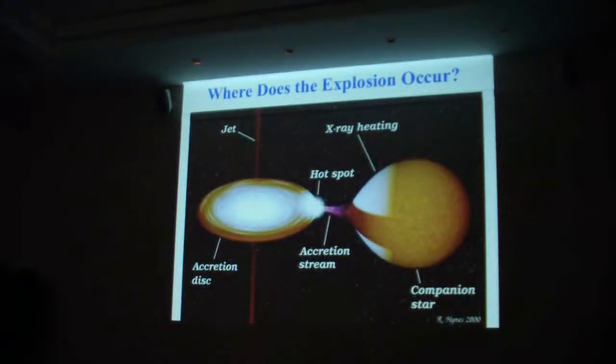So here's the explosion, close binary. Cool star here. Transfer material through the inner Lagrangian lobe into an accretion disk. We've been hearing about accretion disks all day. Anyway, these are small. And we get material blown off during the accretion process.